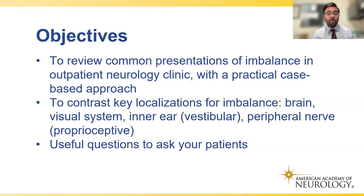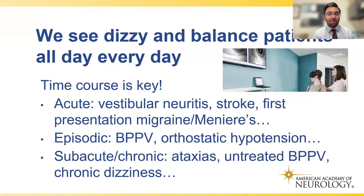We want to contrast key localizations for imbalance including brain, visual system, inner ear or vestibular, and peripheral nerve or proprioceptive problems, and give a framework as well as useful questions to ask patients. We practice in a setting where pretty much our day-to-day is dizziness and vertigo — we see dizzy and imbalanced patients all day, every day.